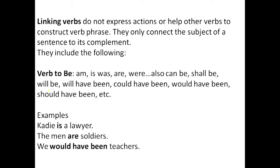Components under verb to be also include: can be, shall be, will be, would have been, could have been, should have been. These are all components under verb to be. Would have been, could have been, should have been could also link the subject of a sentence to a word that describes it or renames it.